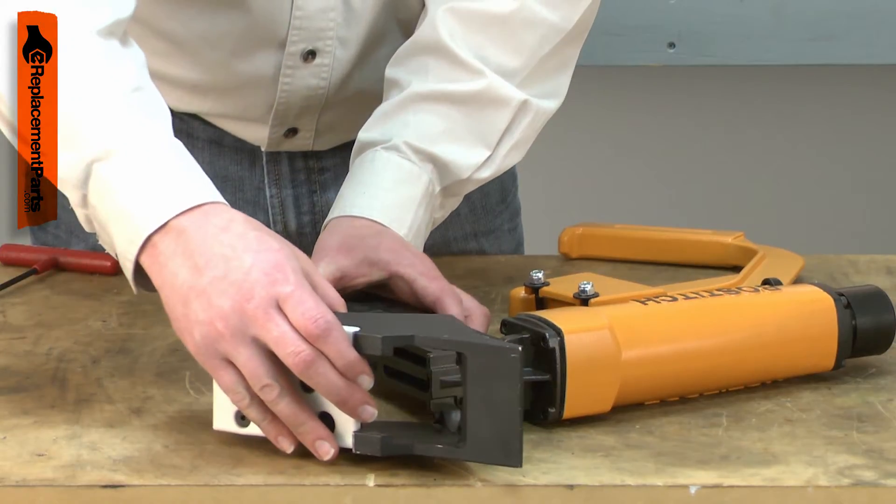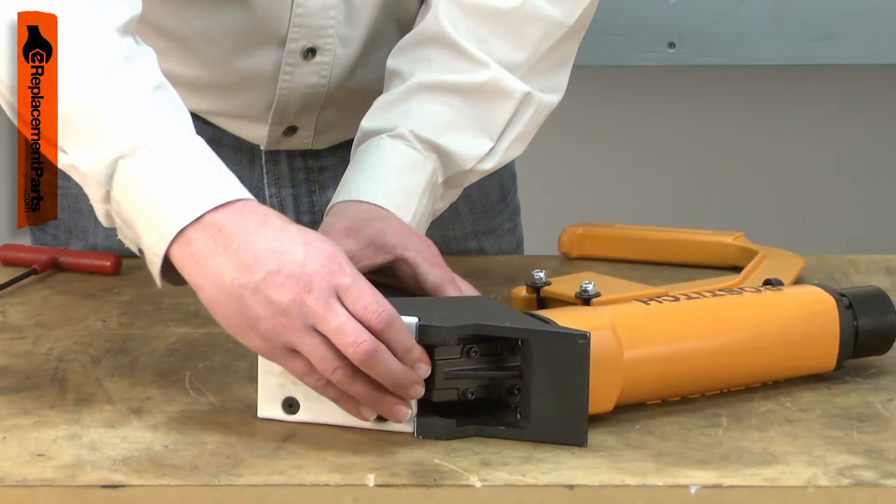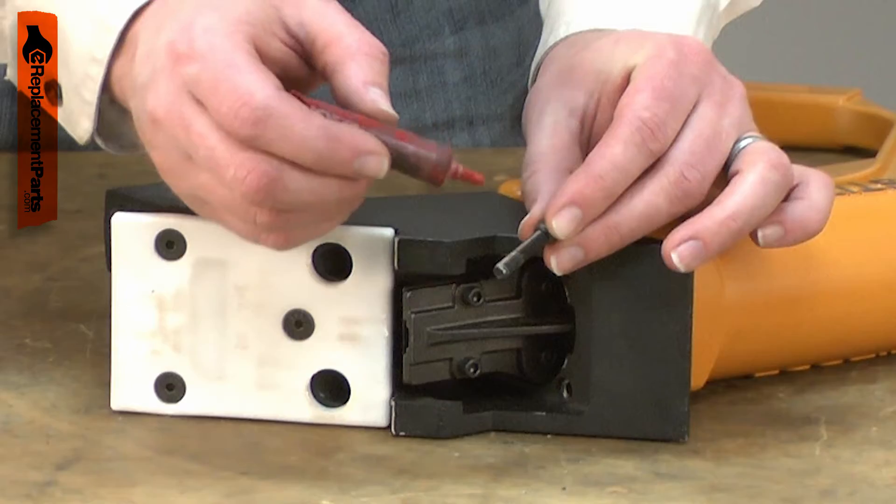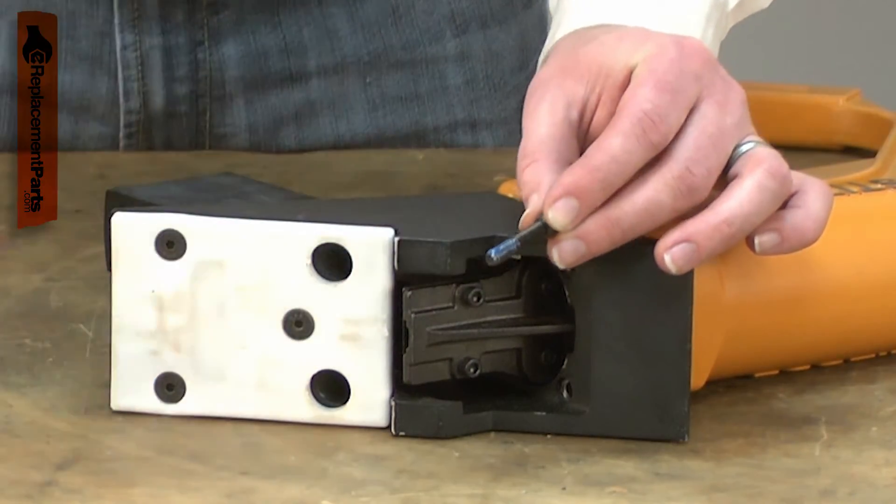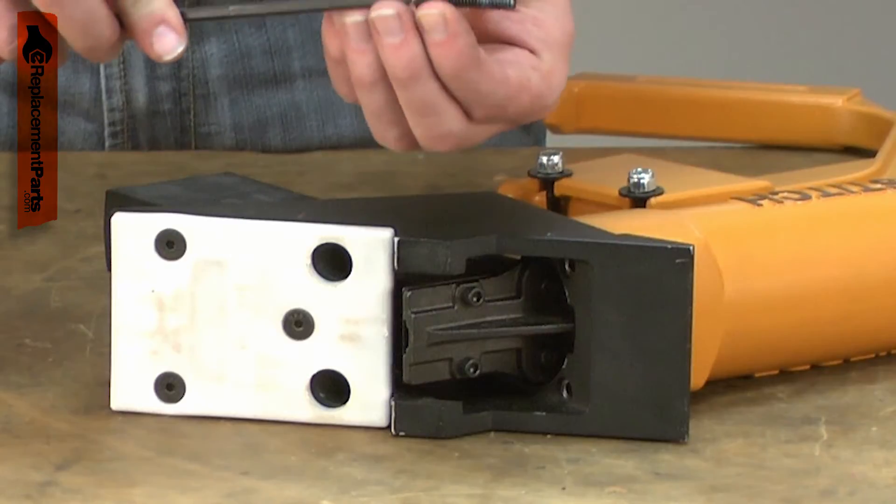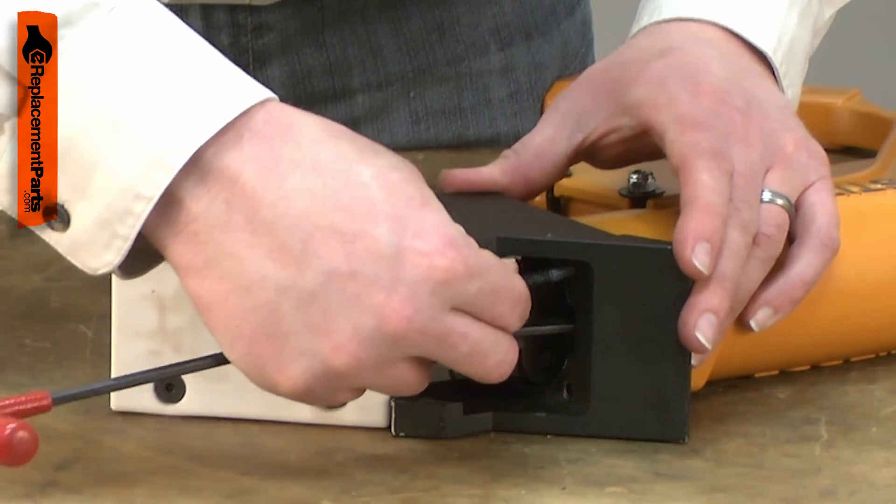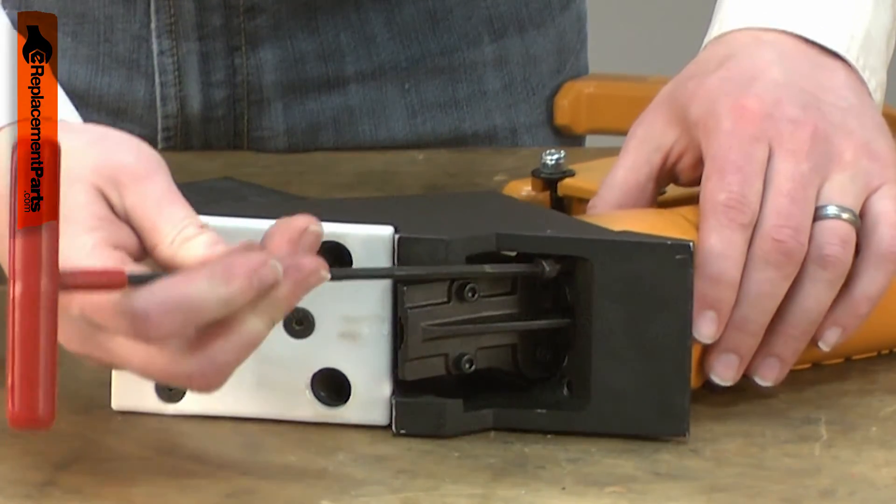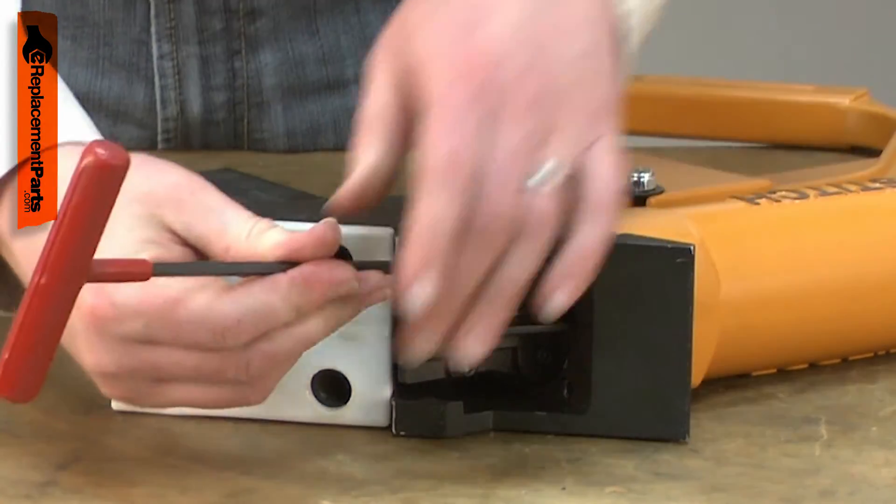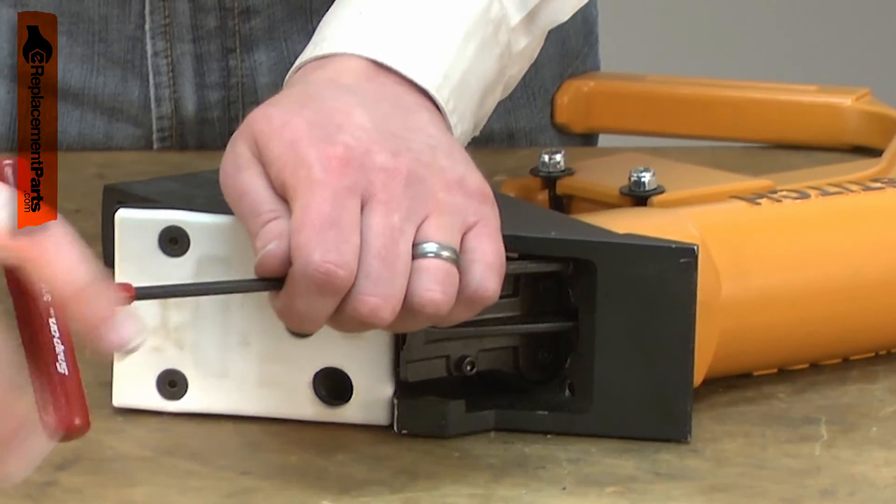Now I can slide the base over the nose piece and magazine assembly and secure all of this with the four screws. Each screw should have some blue Loctite applied to it for assembly. I'll leave the screws loose until the end. This will help with alignment.